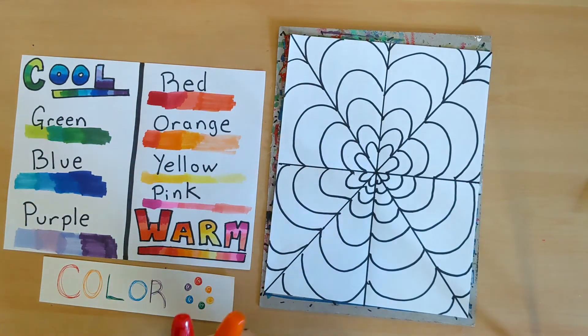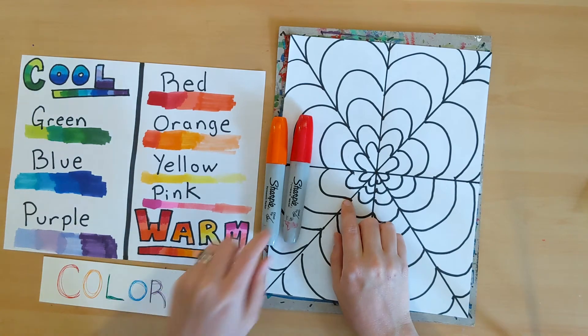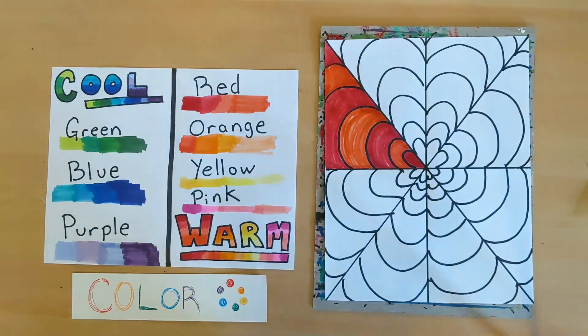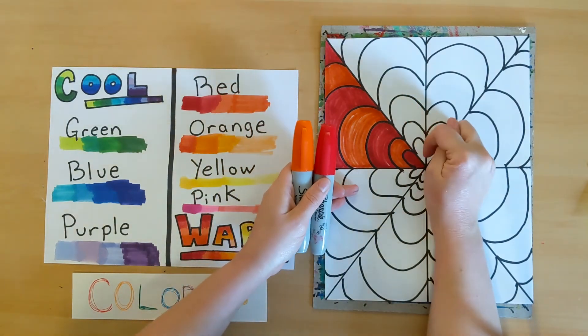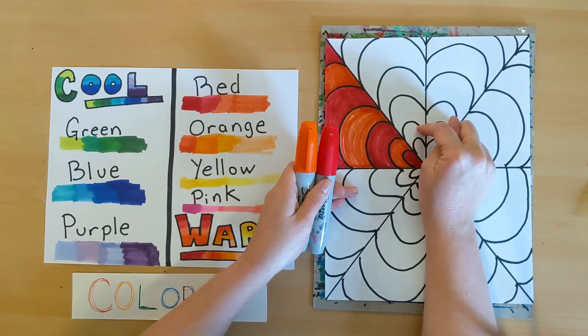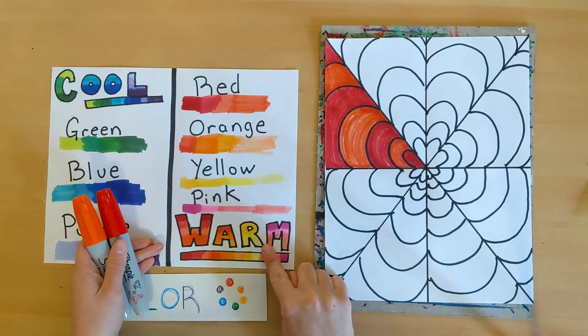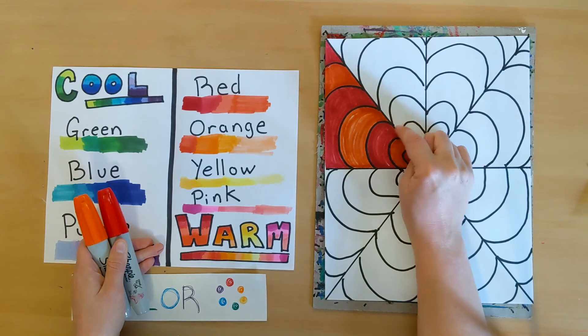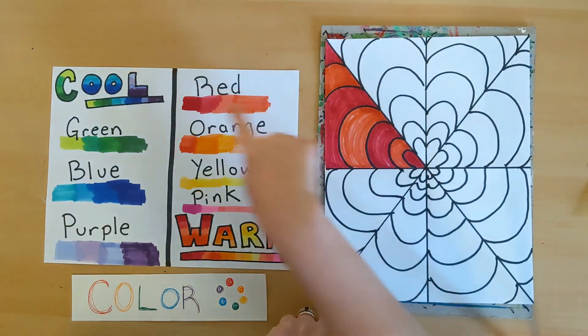So for my first section, I think I'm going to make a pattern out of red and orange. Red and orange are both warm colors. So this entire section is warm. You don't want the same colors touching themselves because then it won't stand out very well. So to help it stand out, the next section I'm going to make cool.